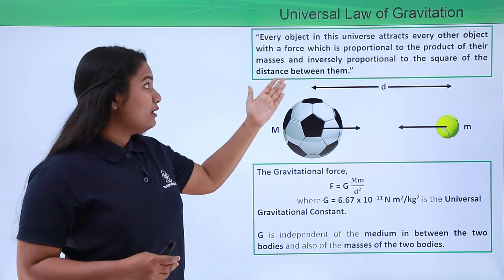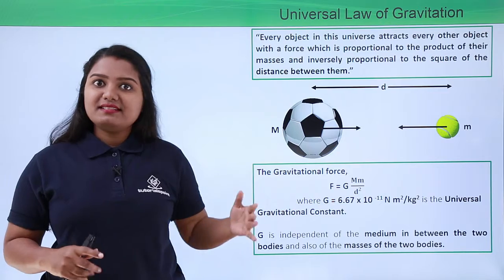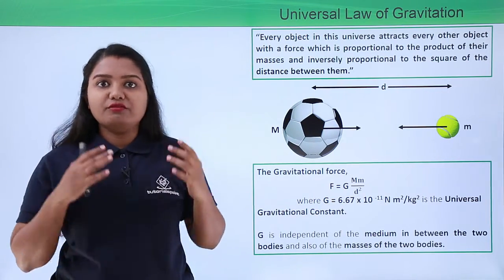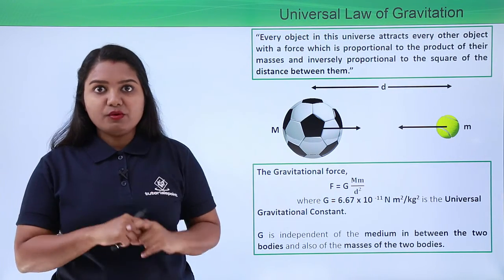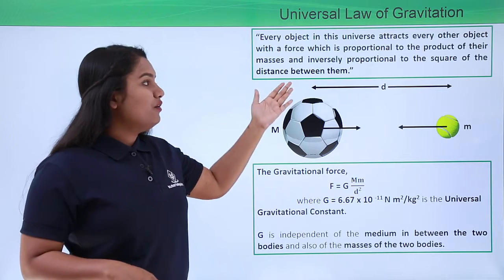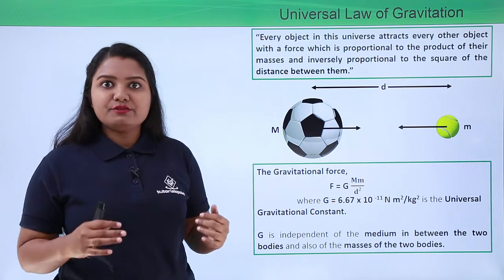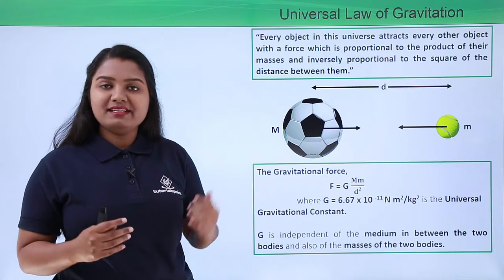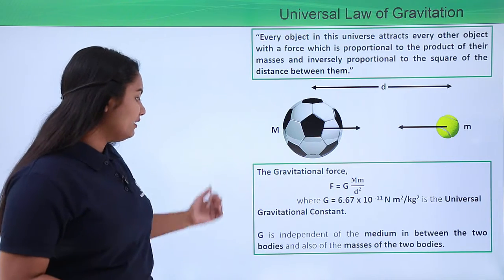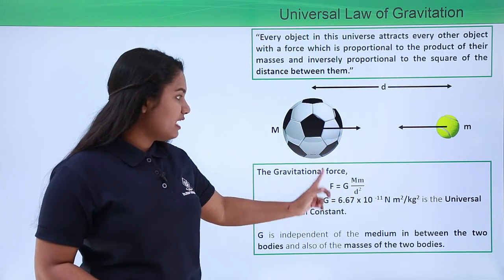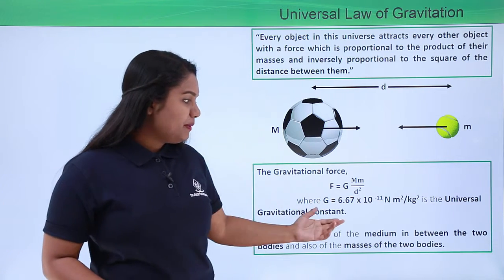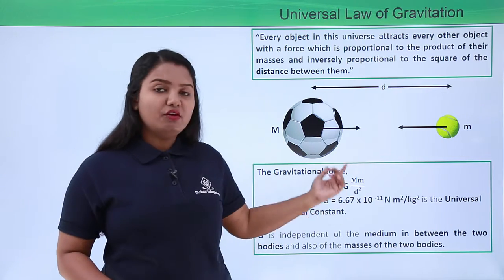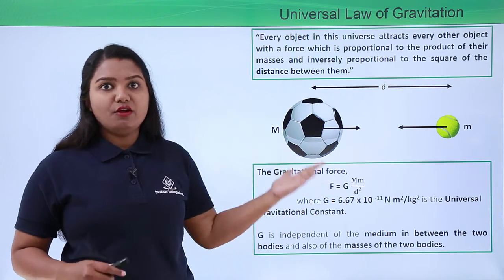This law is known as the universal law of gravitation since it is valid in any corner of this universe for any two or more bodies — it is such a generic law. The universal gravitational constant G is independent of the medium between the two objects and also independent of the masses of the two objects.